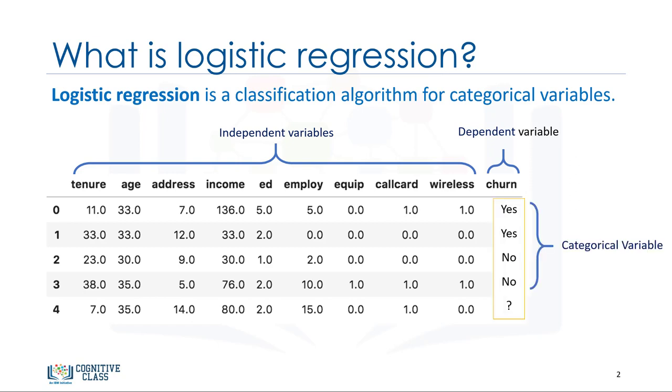In logistic regression, independent variables should be continuous. If categorical, they should be dummy or indicator-coded. This means we have to transform them to some continuous value. Please note that logistic regression can be used for both binary classification and multi-class classification, but for simplicity, in this video, we'll focus on binary classification.